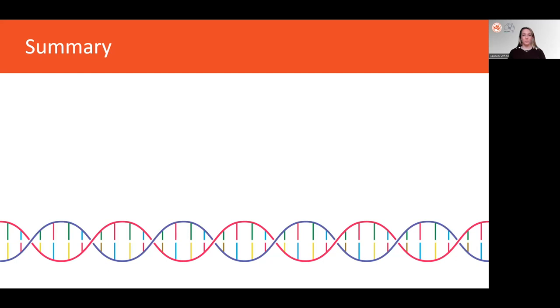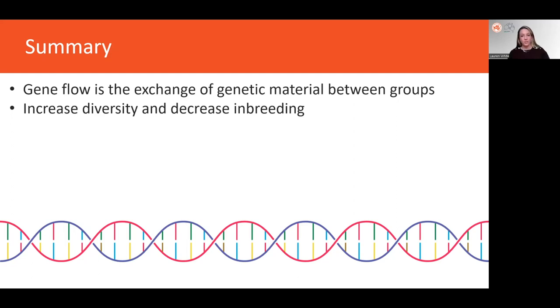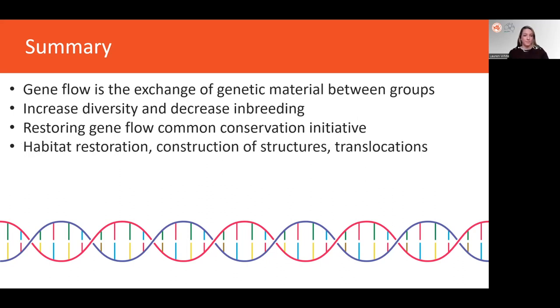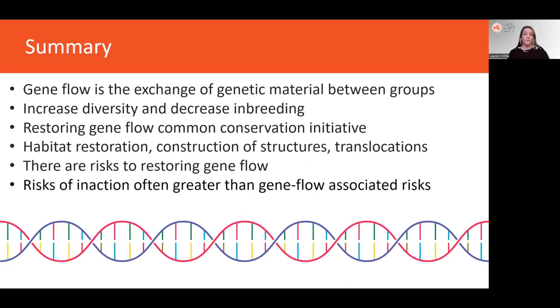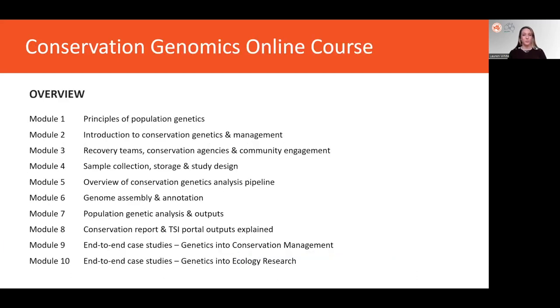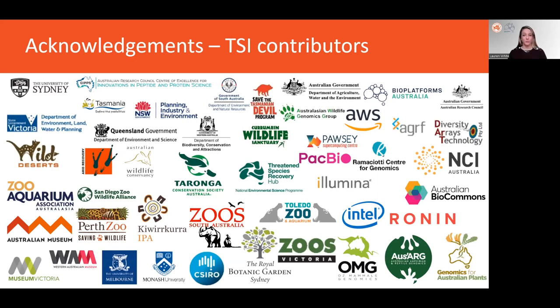Okay, that's just about it for me from module 1.4. To finish up, I'd like to summarize the main points that I want you to take away from this module. Gene flow is the exchange of genetic material between groups through the migration and interbreeding of individuals. It can increase genetic diversity and decrease inbreeding, which is why it's often used as a conservation initiative, which can be achieved through habitat restoration, construction of various structures and translocation programs. There are risks to restoring gene flow that must be carefully assessed, but the risk of inaction is often greater than the gene flow associated risks. I hope you found this module useful. For more details on other aspects of conservation genomics and a number of end to end case studies, please check out the other modules in this open course. And thank you to all the parties that have contributed to and continue to contribute to TSI. Thank you. Bye.